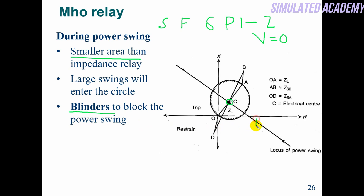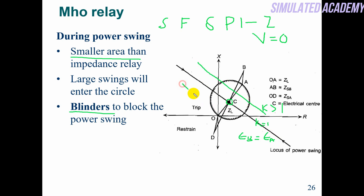When K equals one, it will be a line. That is, if two sources EA and EB are connected and they are equal, it will be a line. If K is greater than zero, the line will come above; if K is less than zero, the line will come below.